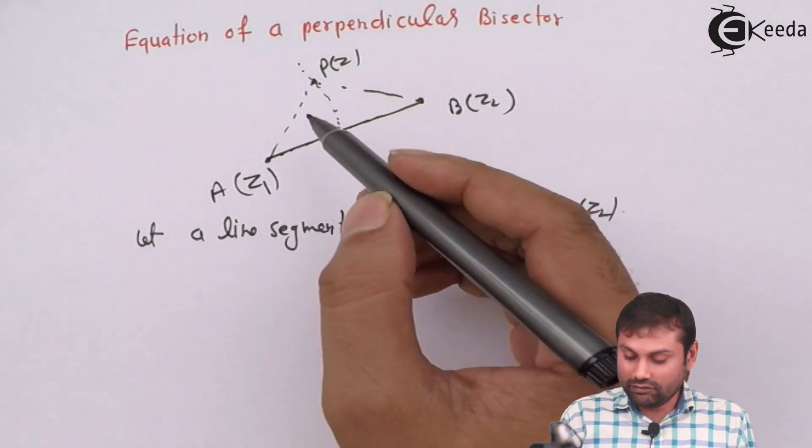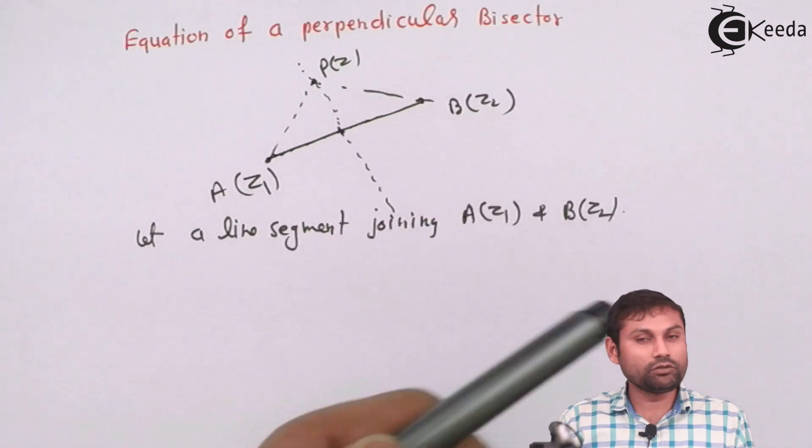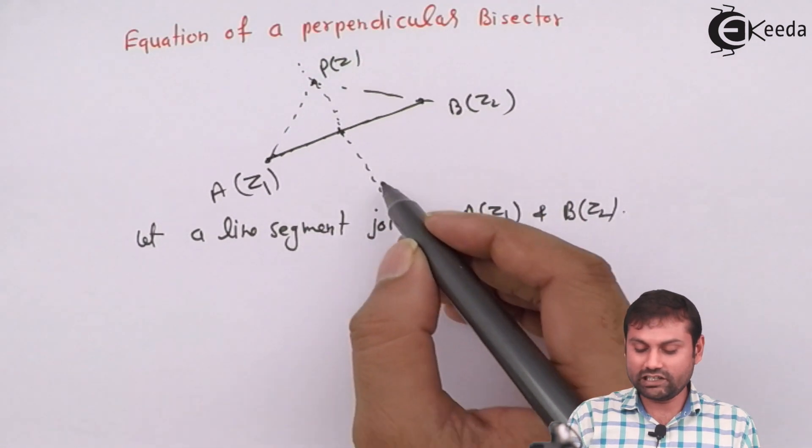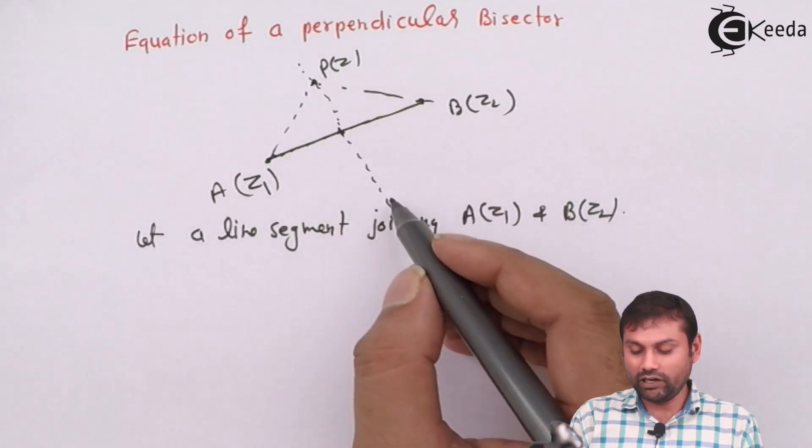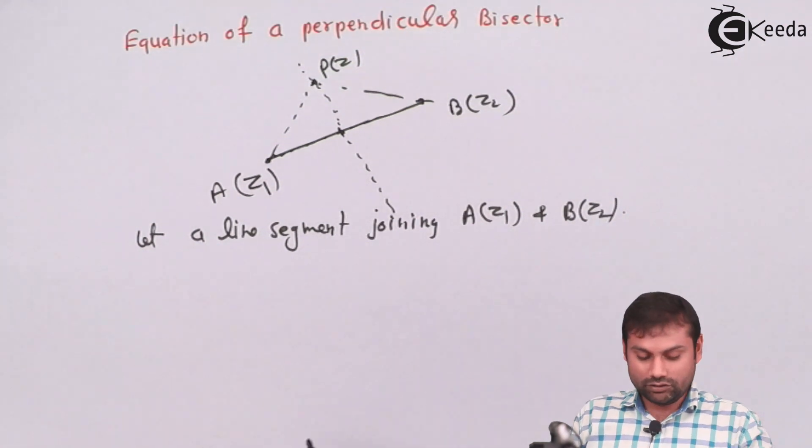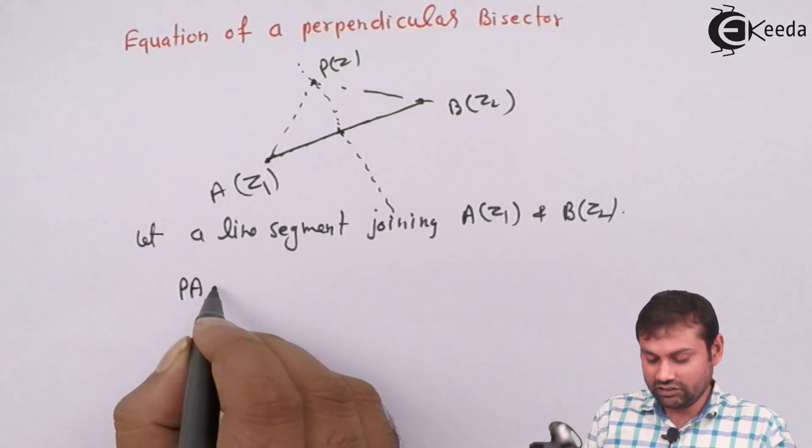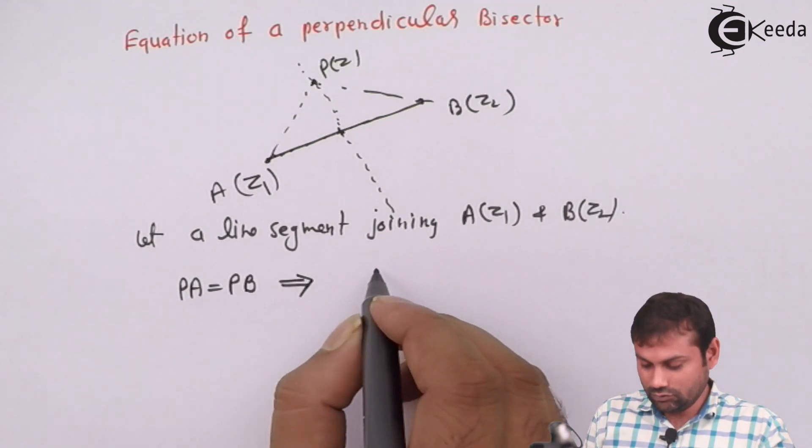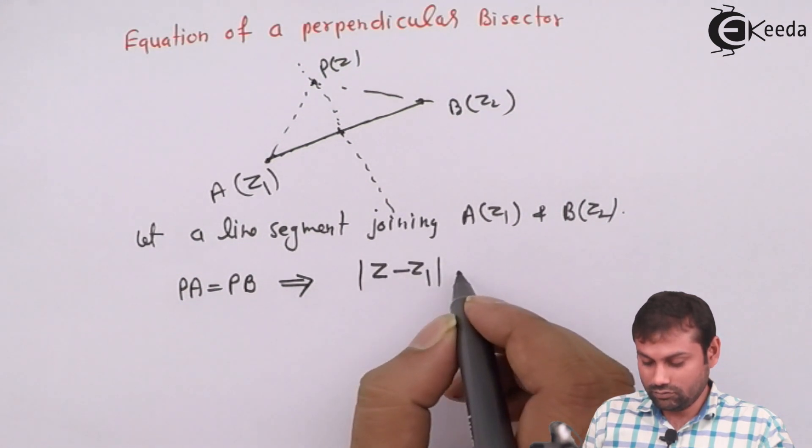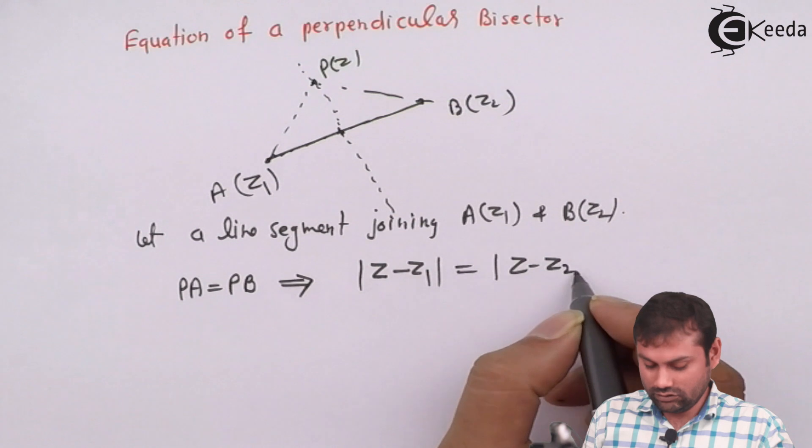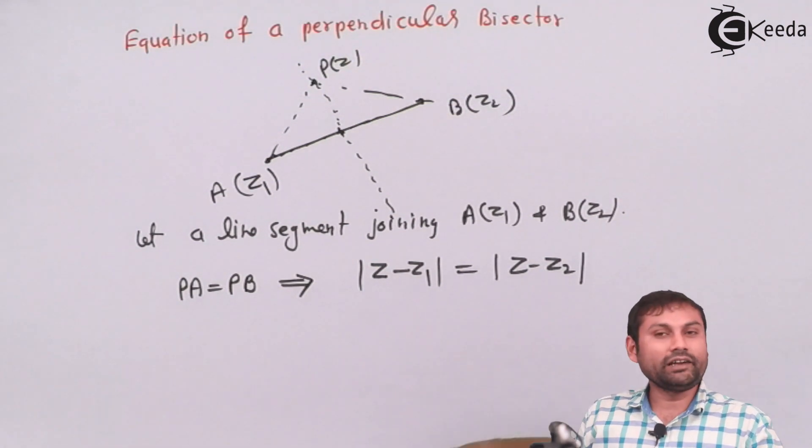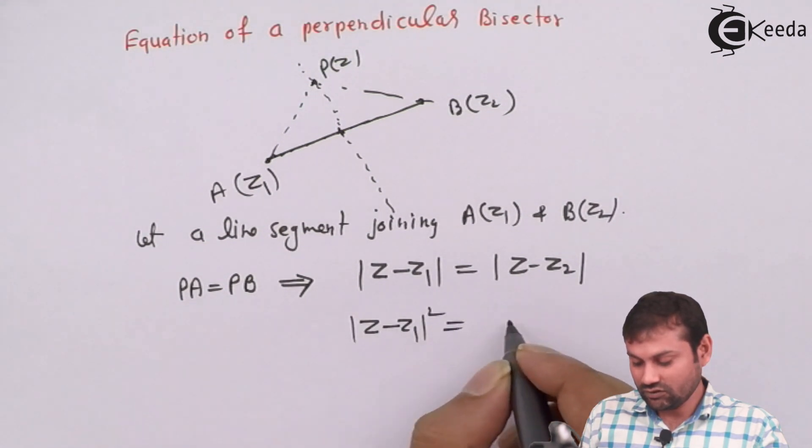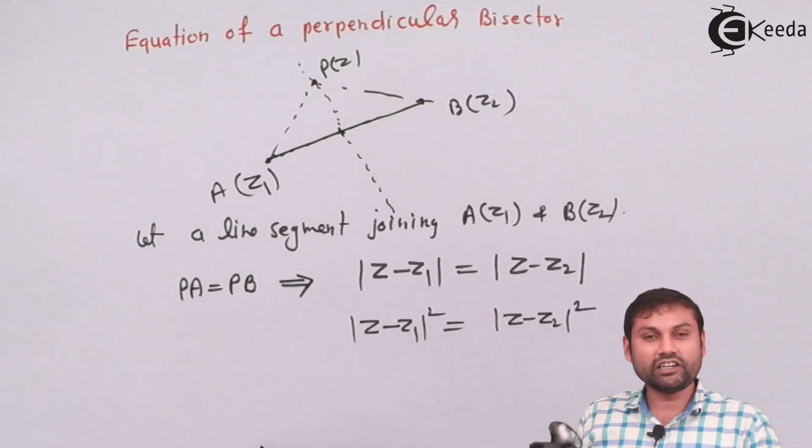This distance and this distance would be same. So let's align segment. This distance PA and PB would be same. If PZ is perpendicular bisector, each and every point has the same distance from A and B.